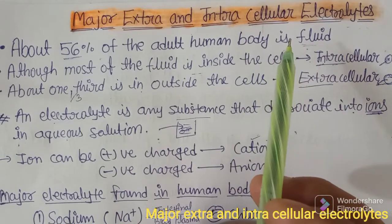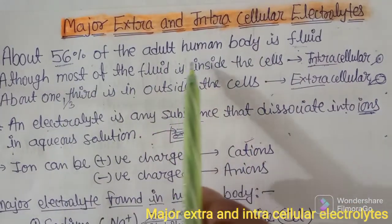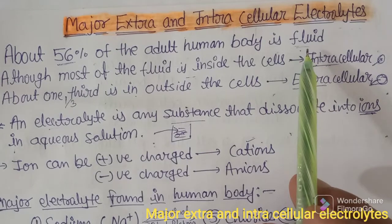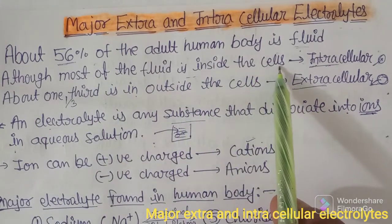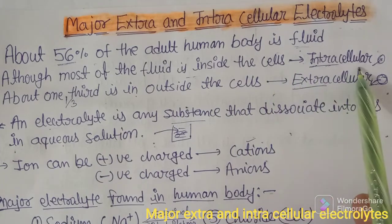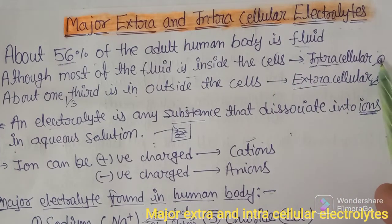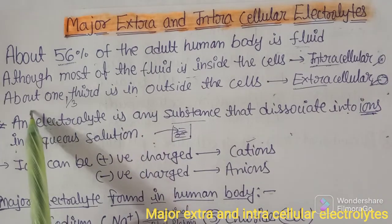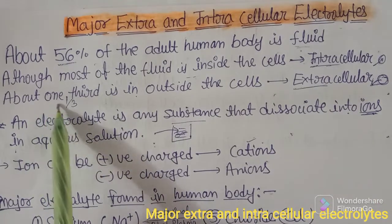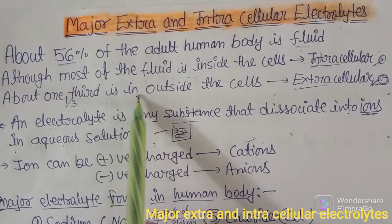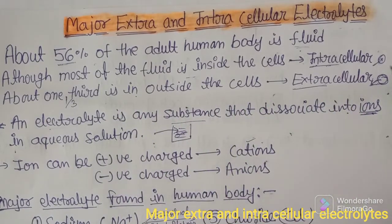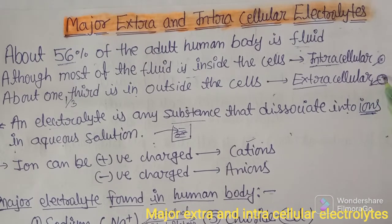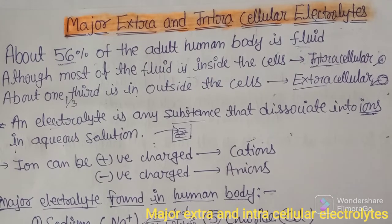56% of the adult human body is fluid. Most of the fluid is inside the cells — those are called intracellular. About one third is outside of the cells, and those are called extracellular.